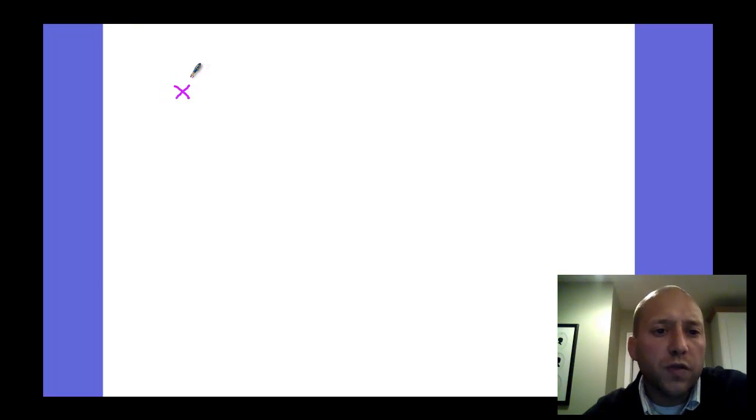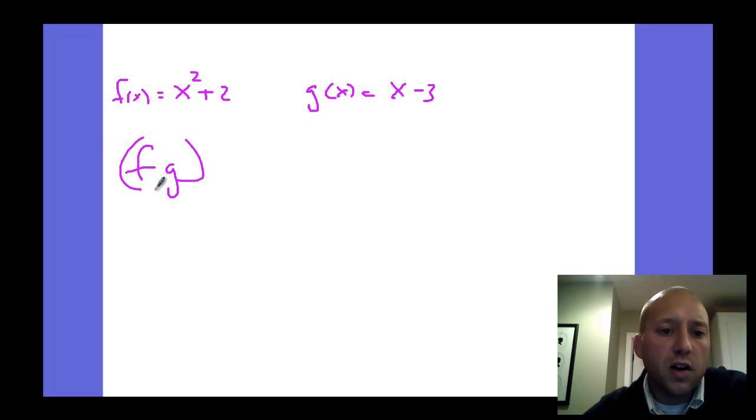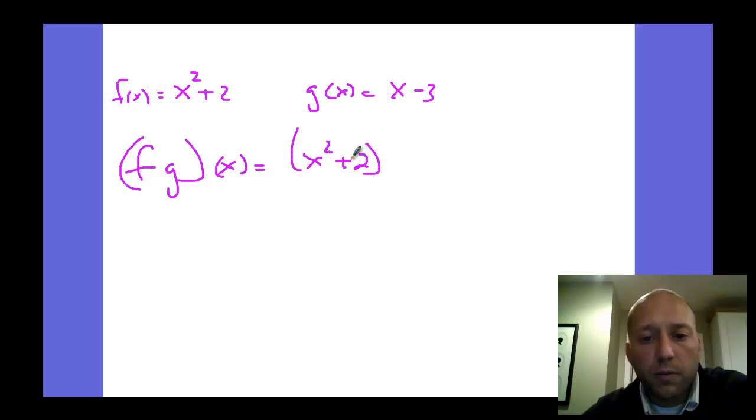Let's do a multiplication one. If I have x²+2 as f(x), and g(x) is x-3, and we want to do (f·g)(x), it's a good review of our basic math where we are distributing. This one's a little more complicated because it's not just two linear binomials. We also have an x² here.